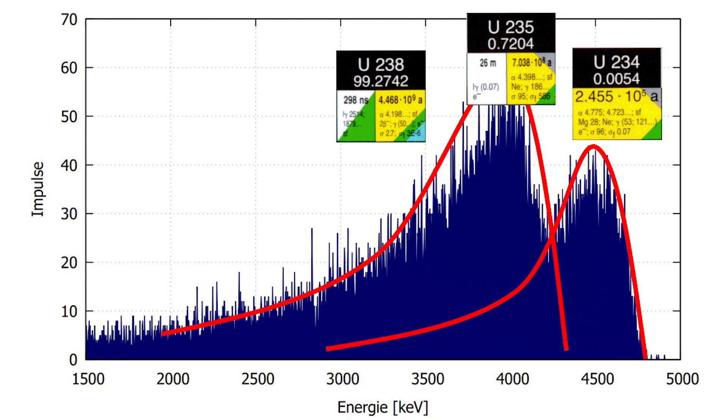Well, uranium-235 has an alpha energy of 4.4 mega electron volts, which is easily missed. But if you look closely and want to see it, you can vaguely discern the right turning point there.